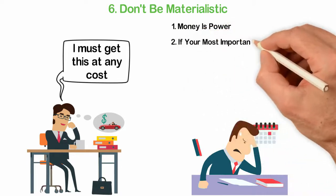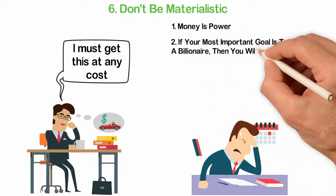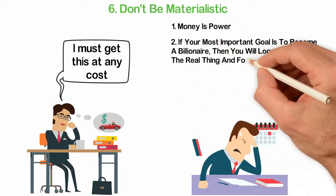2. If your most important goal is to become a billionaire, then you'll lose sight of the real thing and focus on money, which means that you'll be willing to do anything for money, including the wrong things.